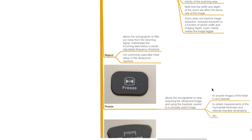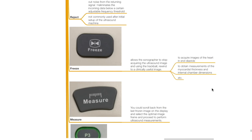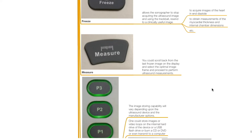Reject: this function allows the sonographer to filter out noise from the returning signal by eliminating incoming data below a certain adjustable frequency threshold. The freeze function allows the sonographer to stop acquiring the ultrasound image and use a trackball to rewind to a clinically useful image — for example, to acquire images of the heart in end-diastole or to obtain measurements of myocardial thickness and internal chamber dimensions. The measure function is used to perform measurements of ultrasonographic images; one can scroll back from the last frozen image to select the optimal image frame and proceed with measurements.